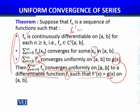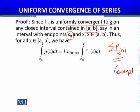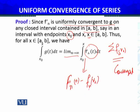Since fₙ' is uniformly convergent to g on any closed interval contained in [a,b] — say an interval [x₀, x], where x₀ is the point where Σfₙ(x₀) is convergent and x is arbitrary — thus, for all x in [a,b], we have: ∫(x₀ to x) g(t) dt = lim(n→∞) ∫(x₀ to x) fₙ'(t) dt. By the fundamental theorem of calculus, the integral of fₙ' equals fₙ(x) − fₙ(x₀).